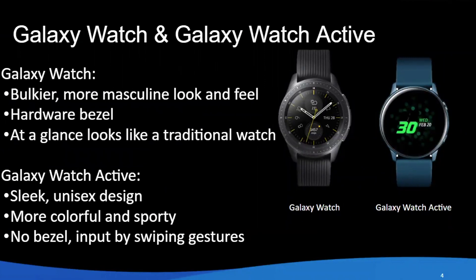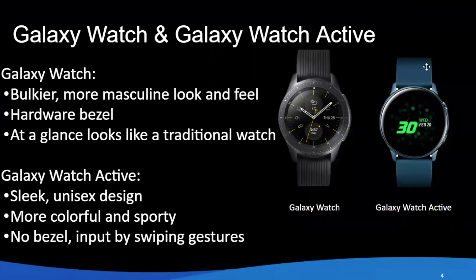We have two main product lines: the first one is the Galaxy Watch and the other is the Galaxy Watch Active. The difference between the two is mostly in terms of design. The original Galaxy Watch is a bit bigger and bulkier, more solid, and has a physical bezel that we're going to use in development. The Active was designed afterwards — we figured out we were under-representing the female audience and millennials, so it has a sleeker, unisex design with more vibrant color options like a rose gold that a lot of people like.